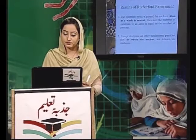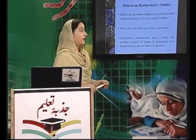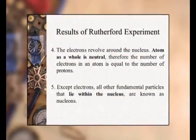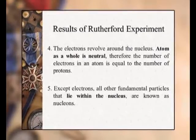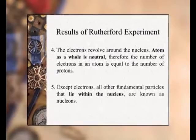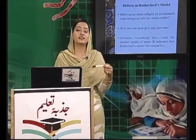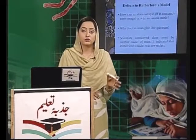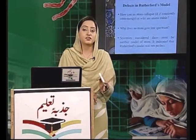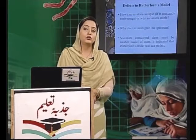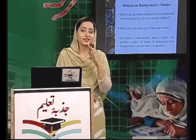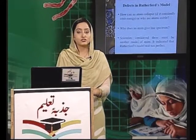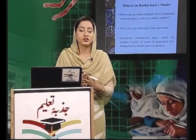لیکن Rutherford کے اس experiment میں کچھ defects پائے گئے۔ پہلا defect یہ تھا کہ Rutherford کے مطابق atom کے اندر جو electrons ہیں وہ مسلسل energy release کرتے ہیں، تو اگر وہ مسلسل energy release کرتے ہیں تو atom کو with the passage of time ختم ہو جانا چاہیے، لیکن ایسا نہیں ہے۔ Atoms stable ہیں، لیکن Rutherford نے اس کی وجہ explain نہیں کی۔ دوسرا defect: جب atoms کی picture لی جاتی ہے تو وہ lines کی form میں ایک pattern آتا ہے جسے line spectrum کہتے ہیں۔ Atom ہمیں line spectrum کیوں دیتا ہے یہ Rutherford کے model سے نہیں پتا چلا، تو اس میں improvisation ہونی چاہیے۔